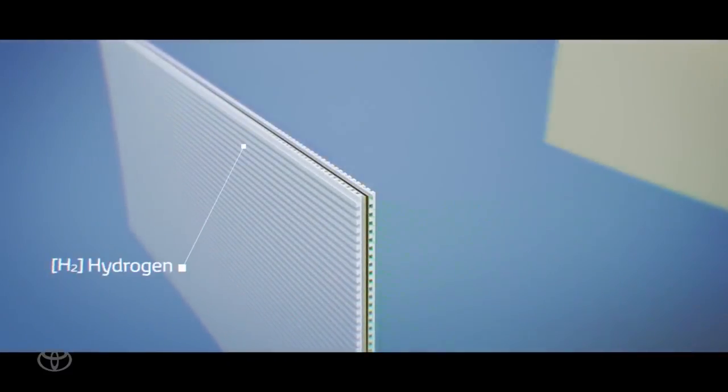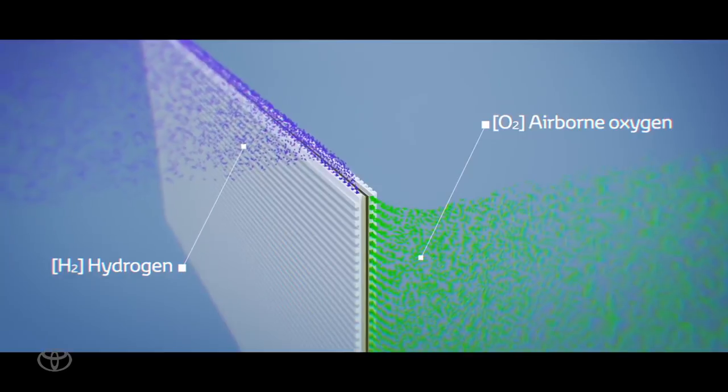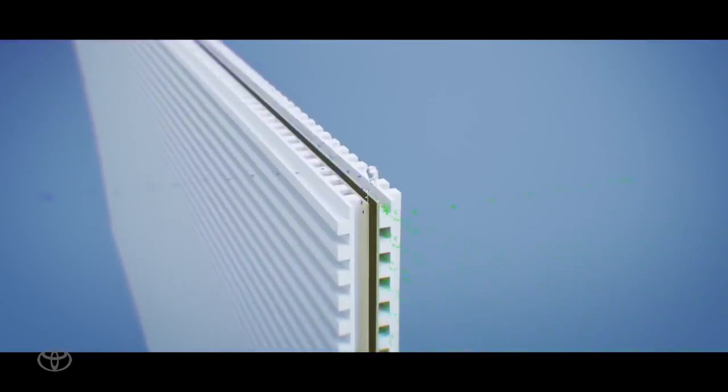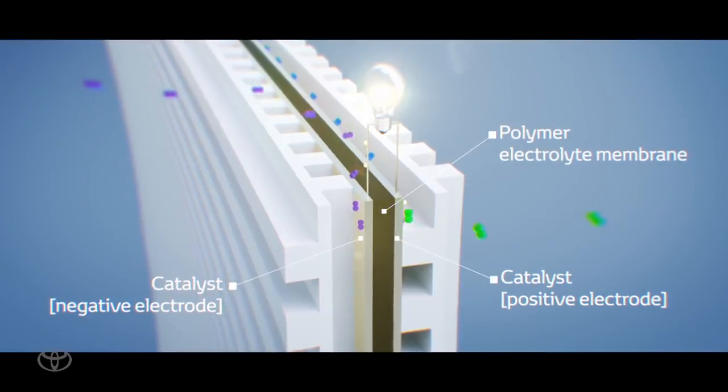This is how the electricity is generated. The car takes in oxygen from the air which meets hydrogen from the high pressure hydrogen tank in the fuel cell. Many fuel cells combine to form the fuel cell stack.